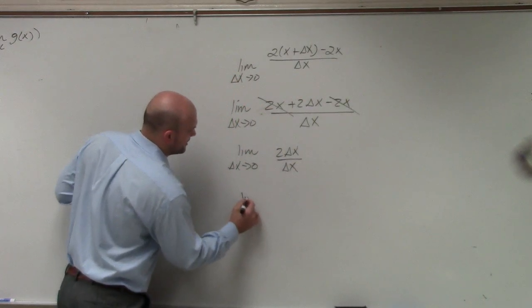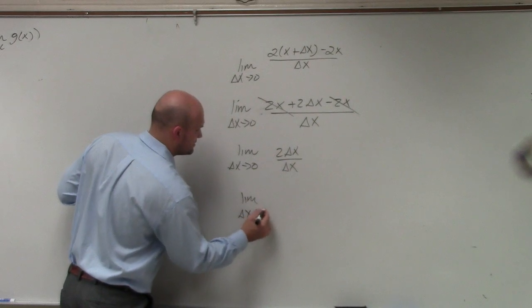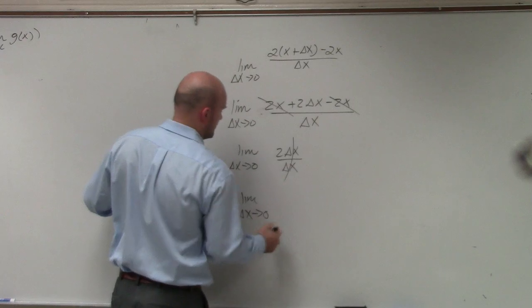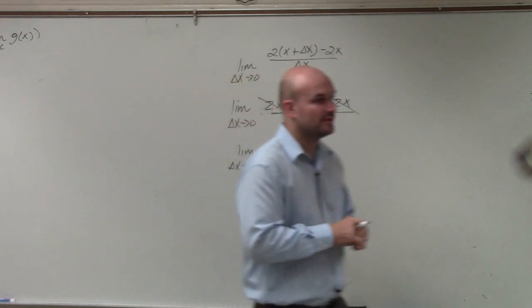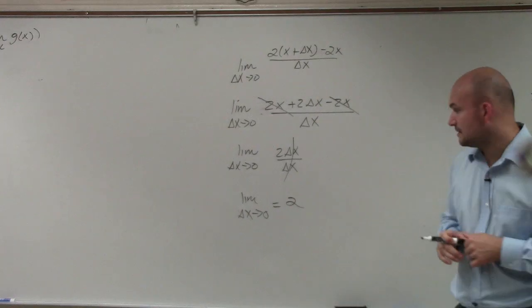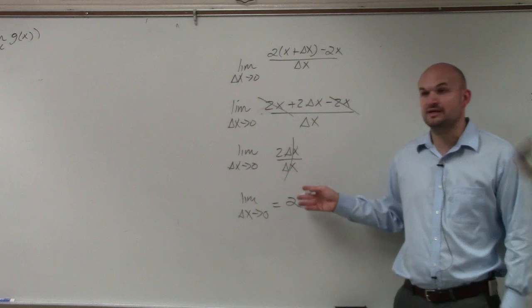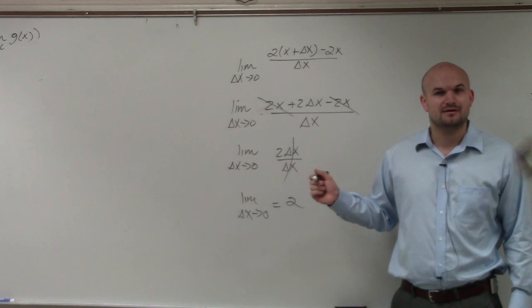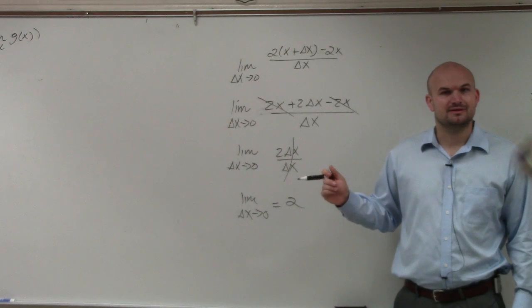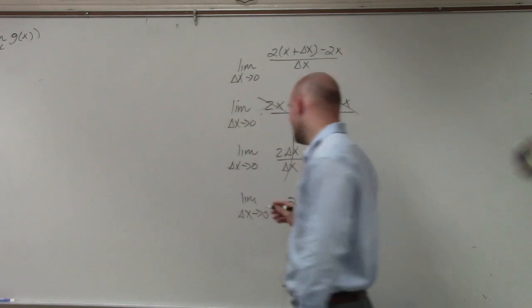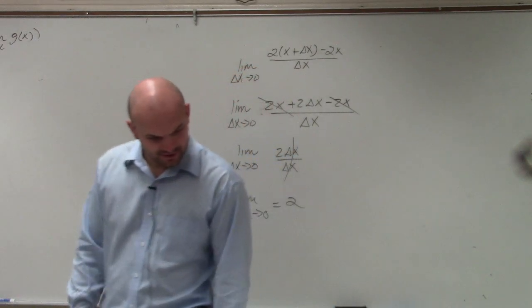And therefore, now I have limit as delta x approaches zero of 2. And therefore, when my limit as approaches some number equals a constant, then my limit is always going to equal - remember, what should it equal? It's just going to equal your constant. I'll just leave it as that.